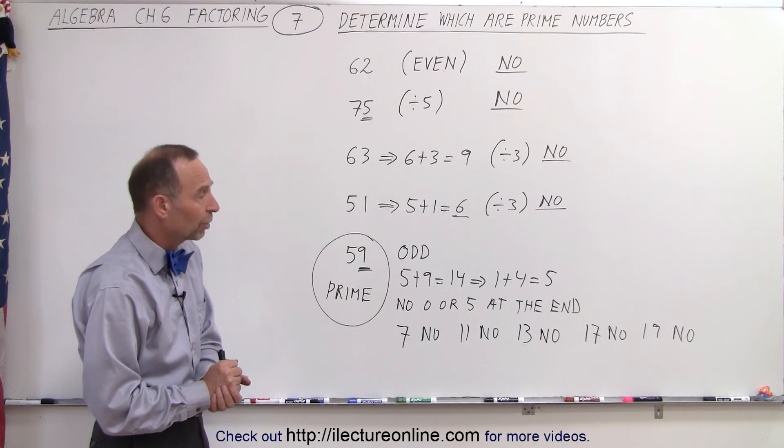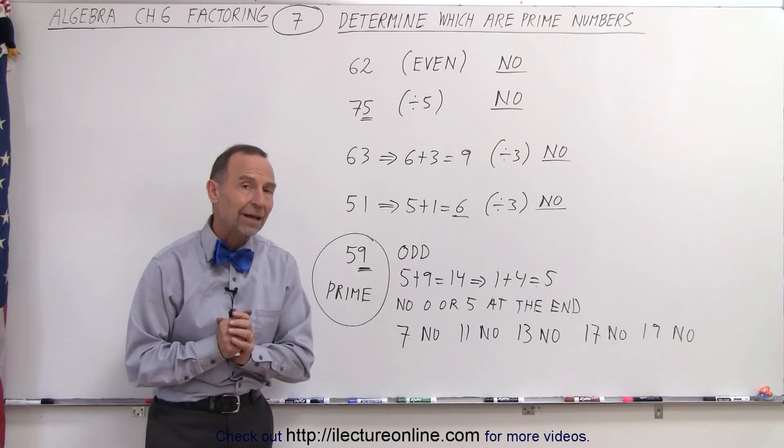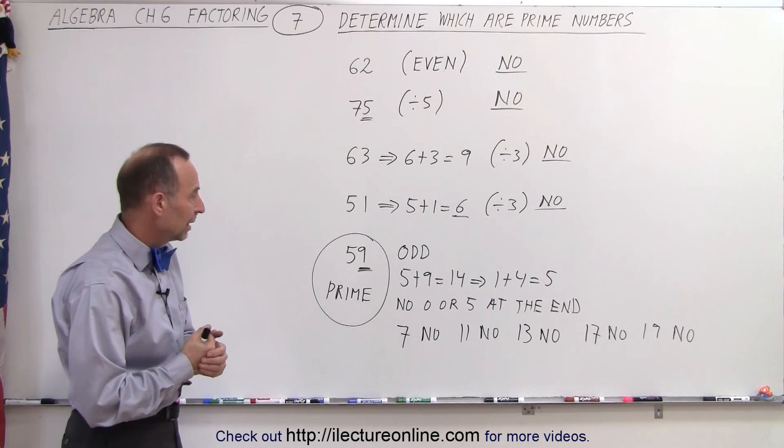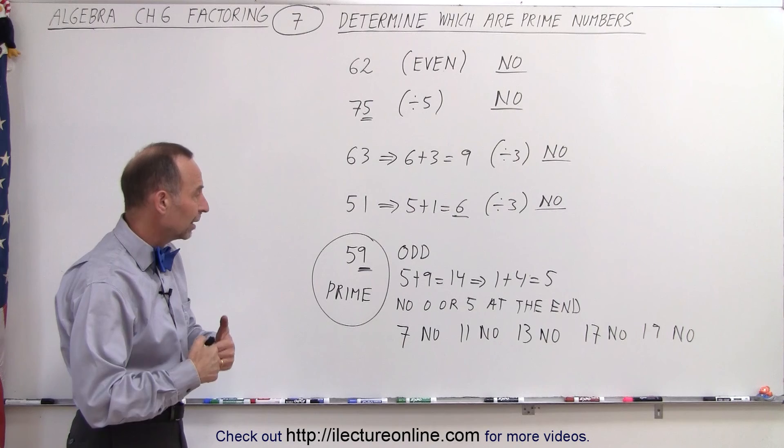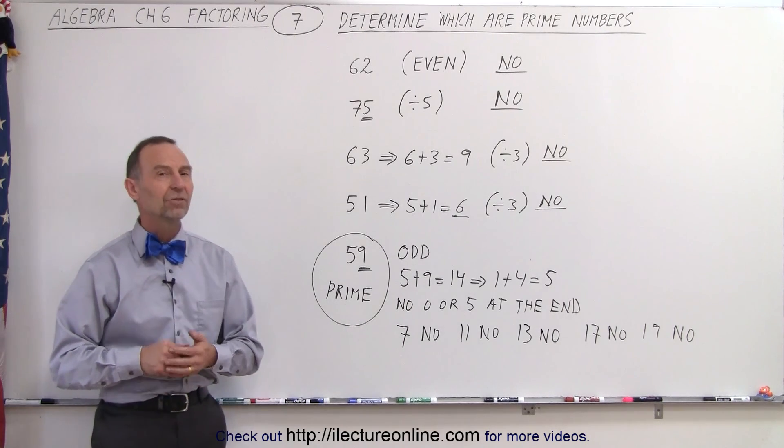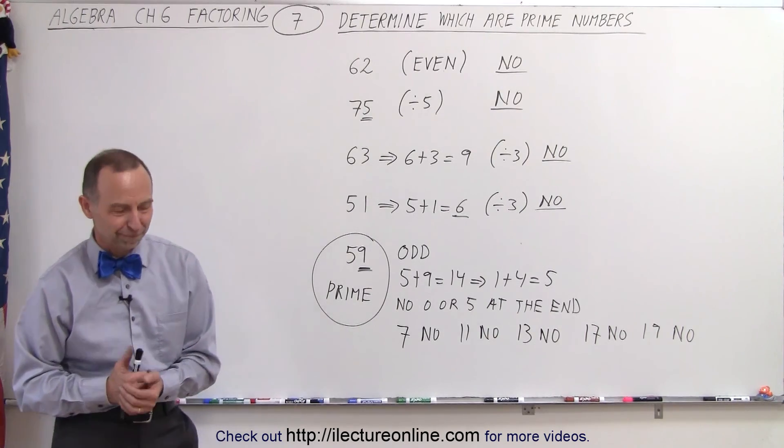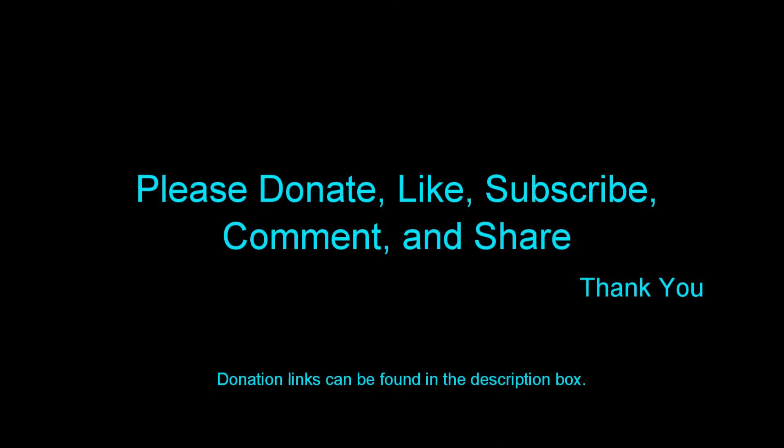You checked all these smaller prime numbers. You checked 2, 3, and 5. None of those matched. Didn't give us the elimination of it being a prime number. So by conclusion, 59 is therefore a prime number. And that is how it's done. Thank you.